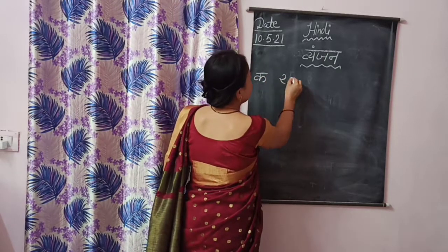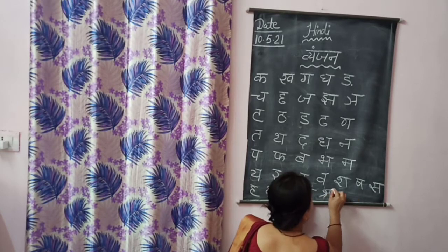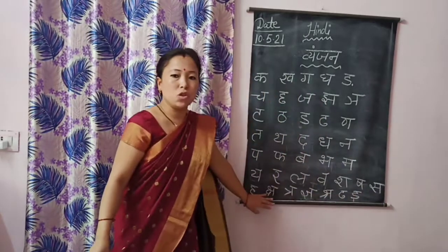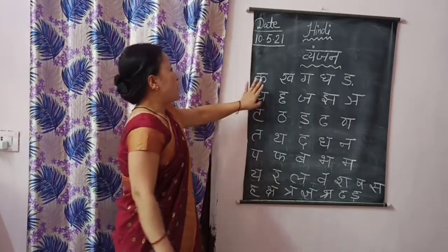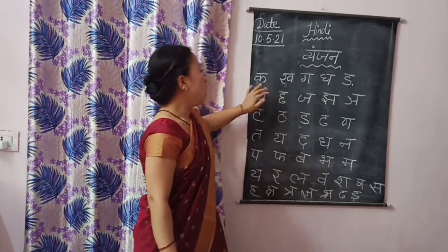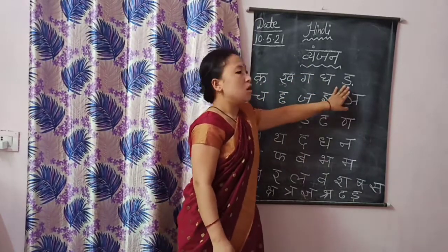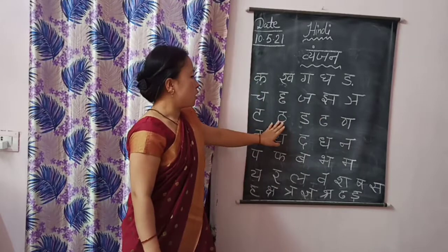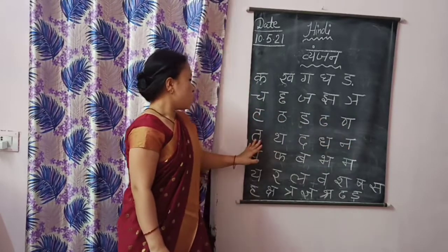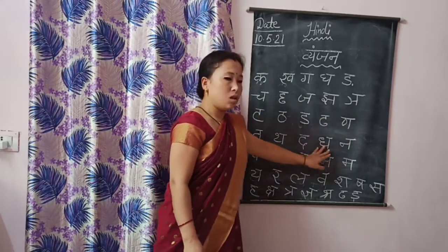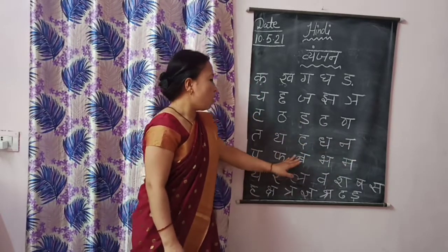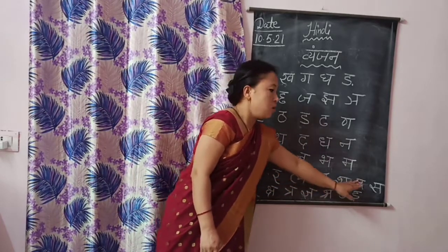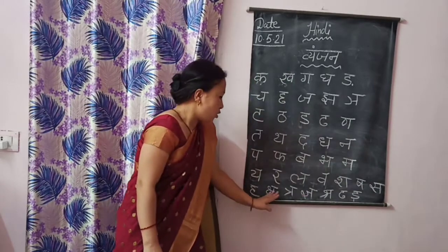Vyanjan: K, Kh, G, Gh, Ang. Ch, Chh, J, Jh, Ya. Ta, Tha, Da, Dha, Na. Ta, Tha, Da, Dha, Na. Pa, Pha, Ba, Bha, Ma. Ya, Ra, La, Va, Sha. Sha, Sa, Ha. Aksh, Shra, Tra, Gya.